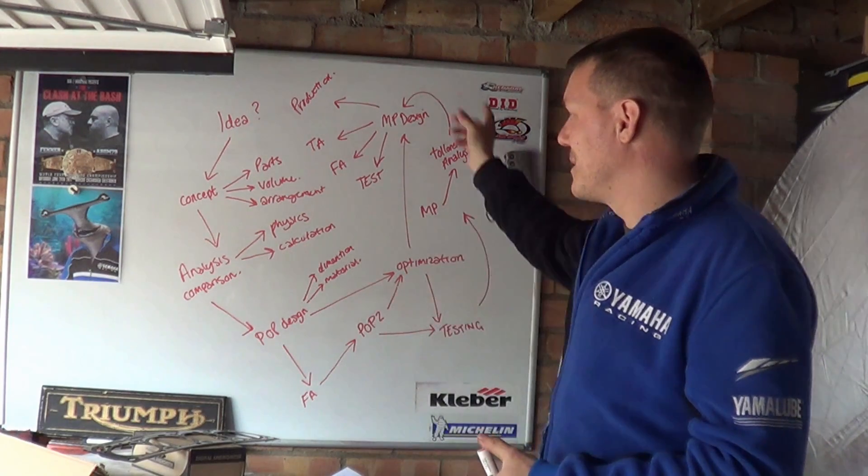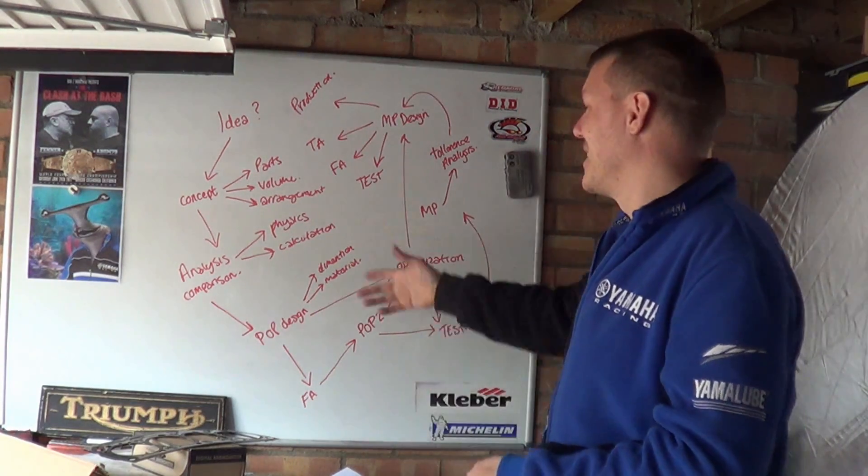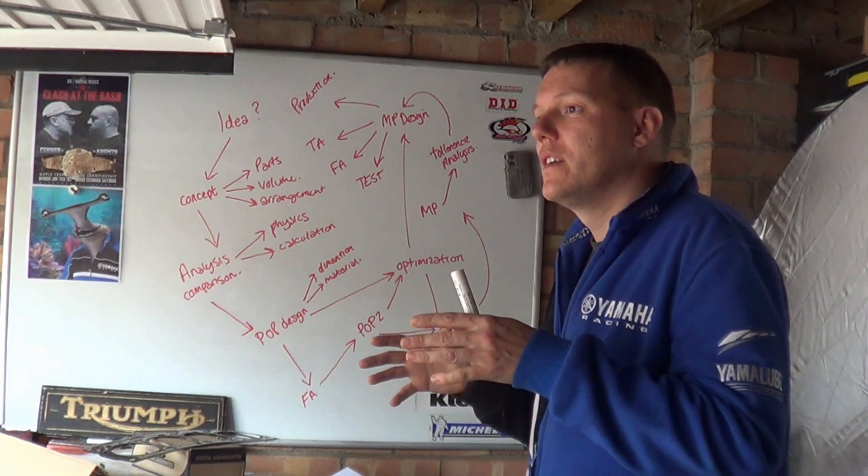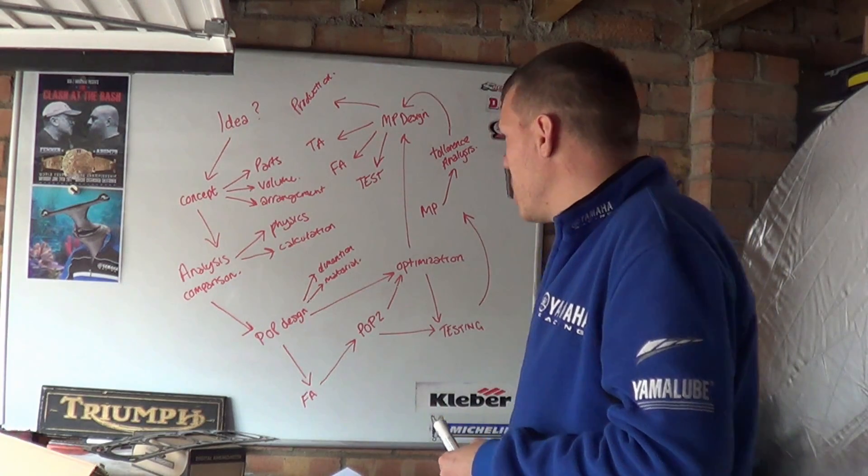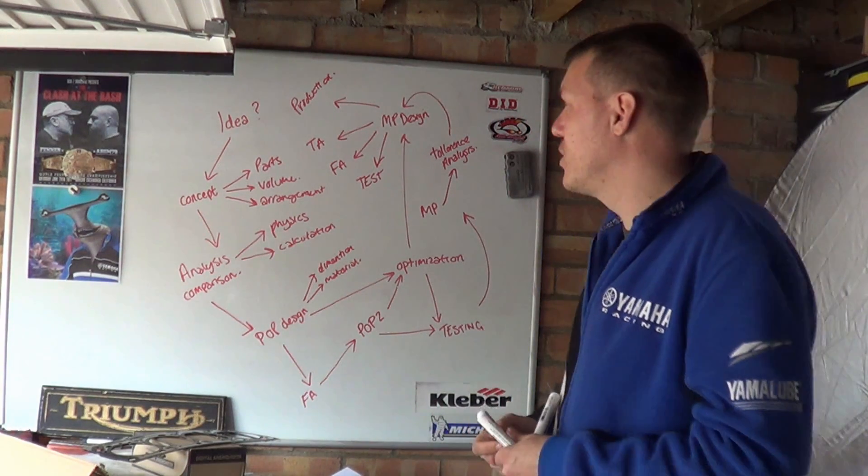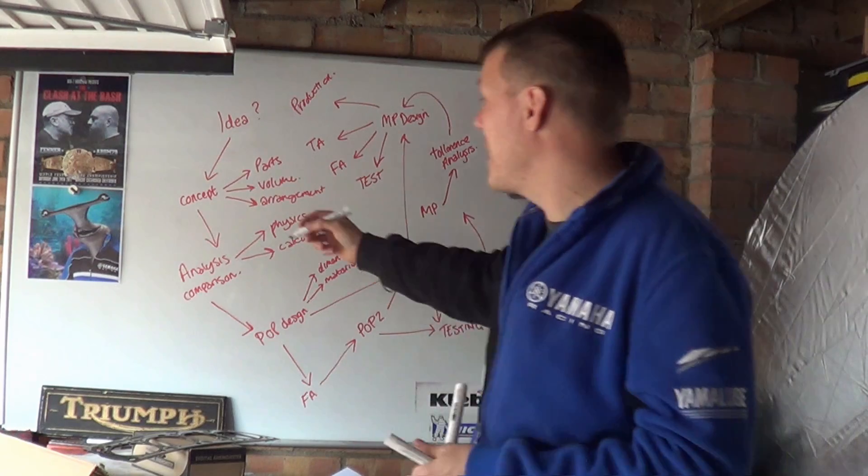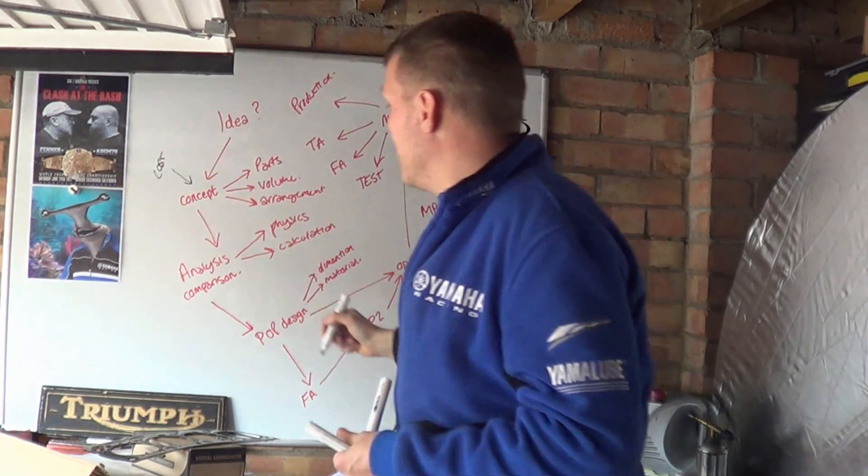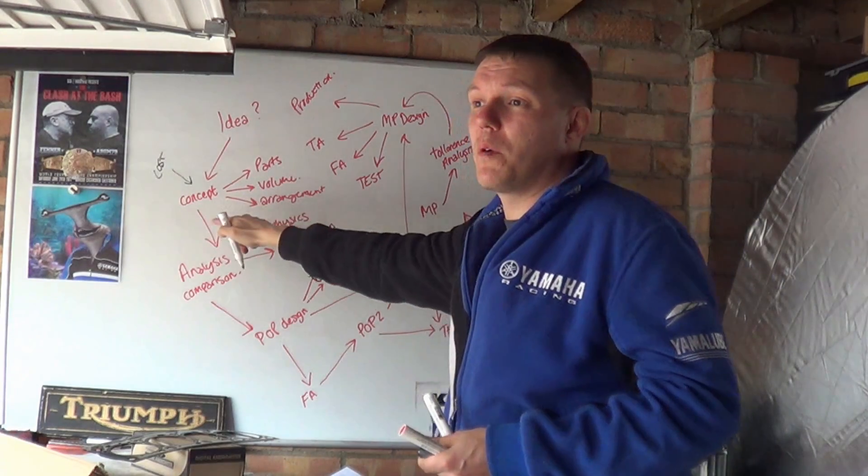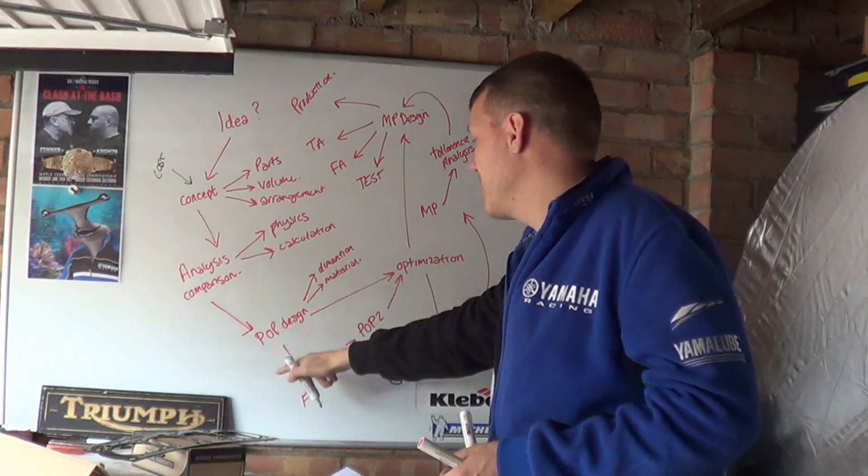So one of the things that I haven't included in this is cost. The reason why I haven't included cost in this is because cost could be anywhere. Cost could affect you here. On your original concept, well, you have to make everything out of diamond. Well, forget that, then we can't do that.